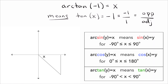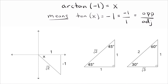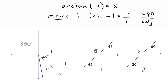Tangent is opposite over adjacent. Writing negative one as a fraction gives −1/1, so the opposite side is −1 (going down) and the adjacent side is 1 (going right). Using the Pythagorean theorem, the hypotenuse is √2. This is again a 45-45-90 triangle, so the reference angle x inside is 45 degrees.